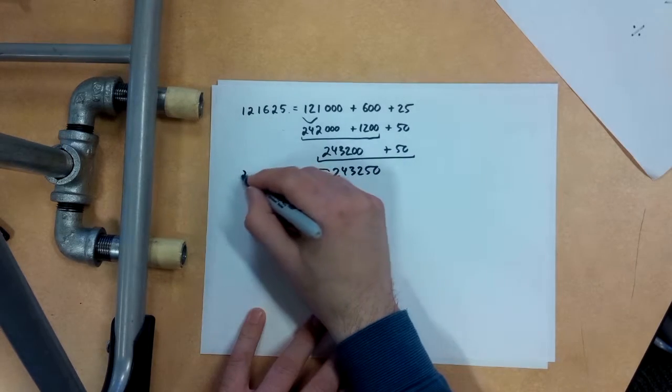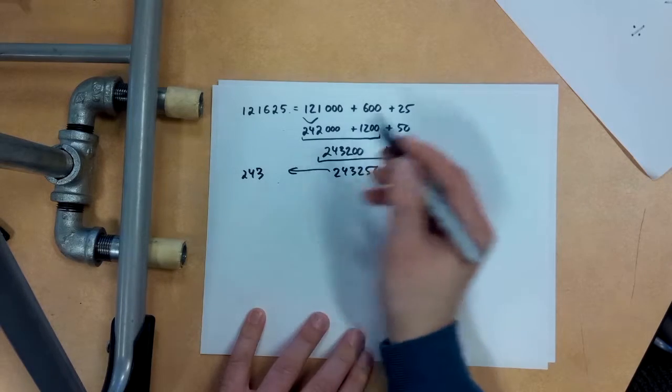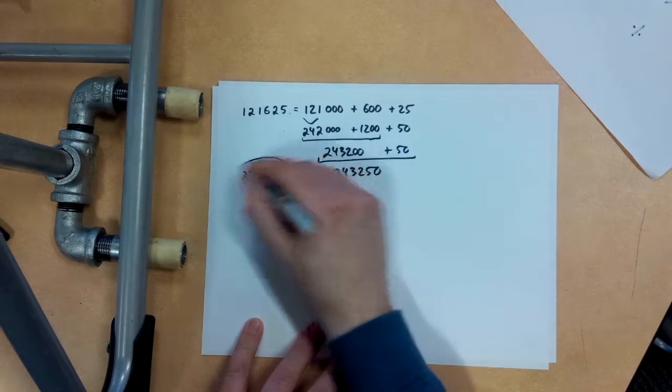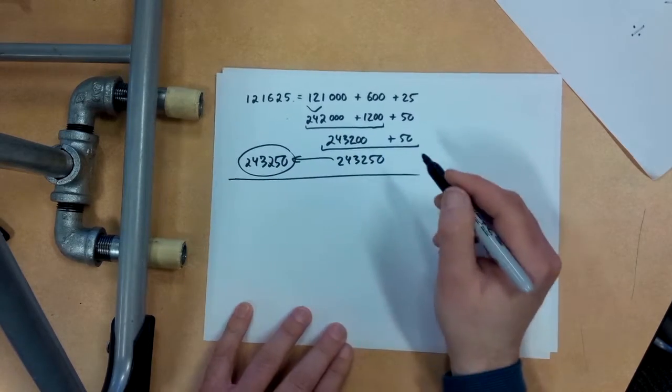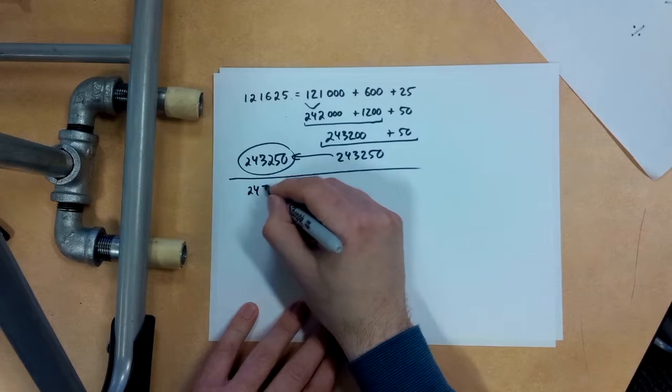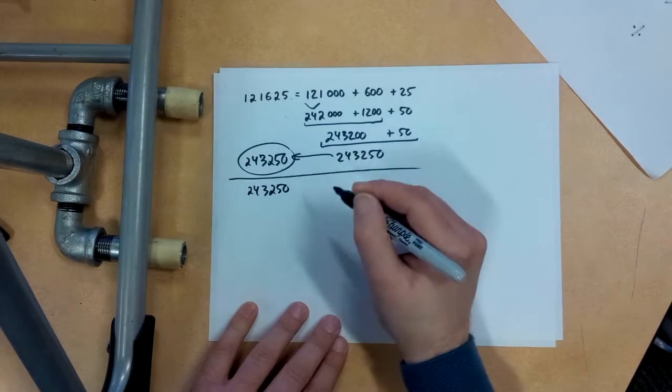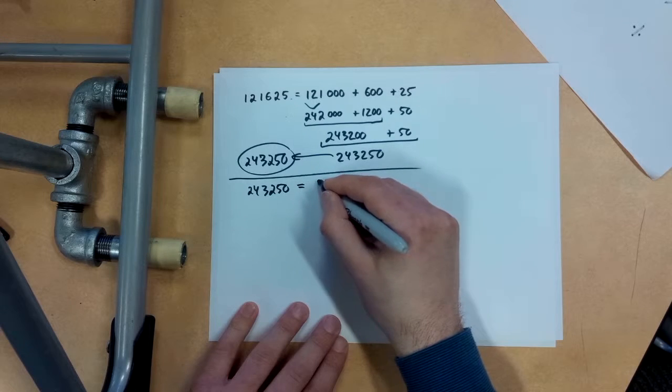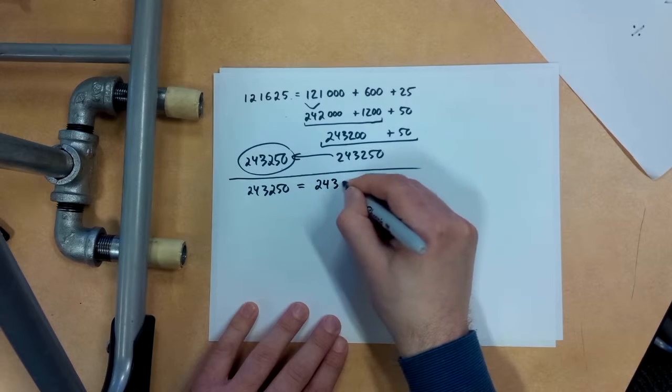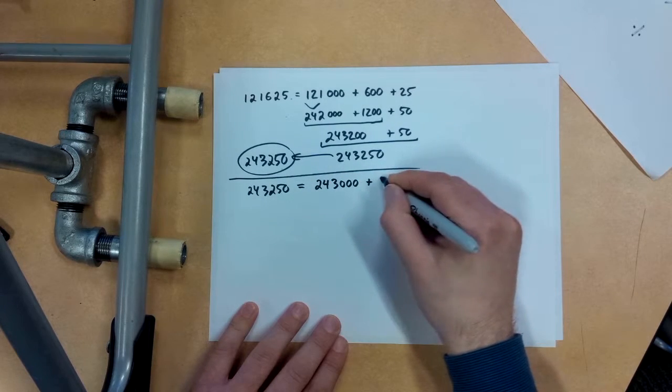So double that, I get 243,250. Now I'm going to double that again. How about that's like saying 243,000 plus 250. I did that because I know that off by heart is 500.